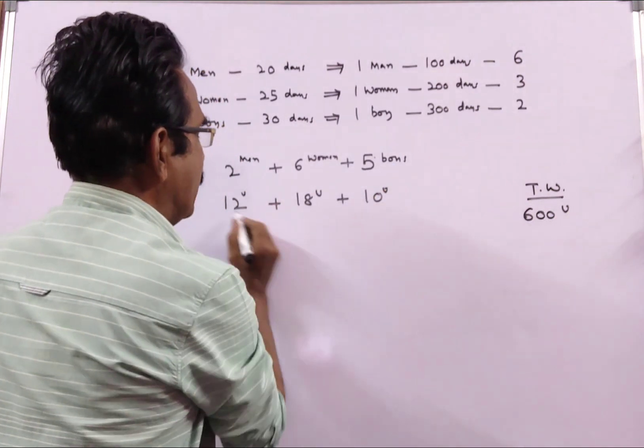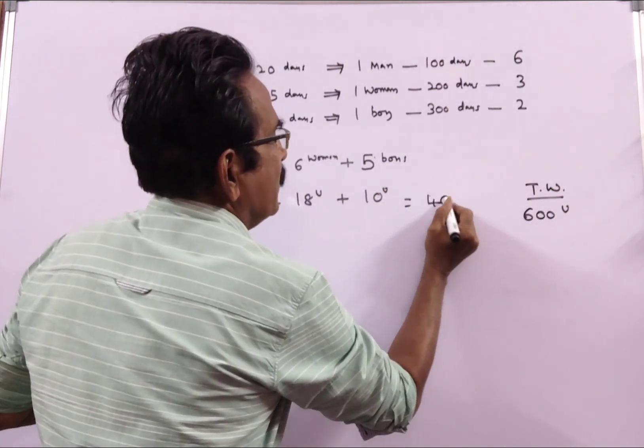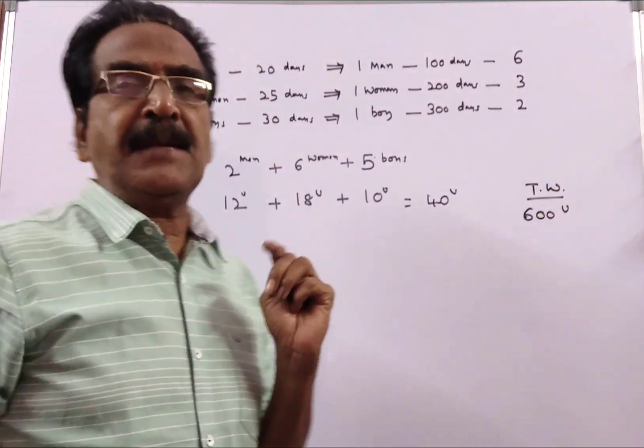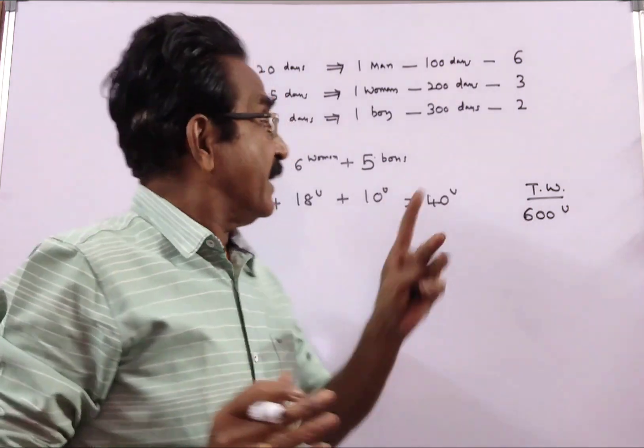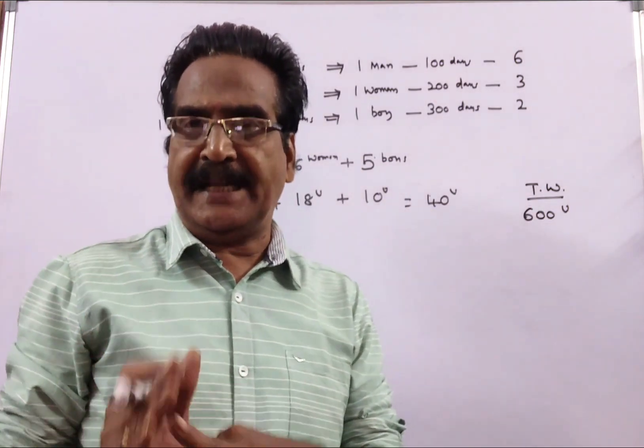So, total 30 plus 10. So, this team of 2 men, 6 women and 5 boys can complete 40 units of work per day.